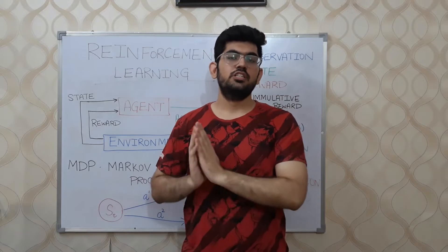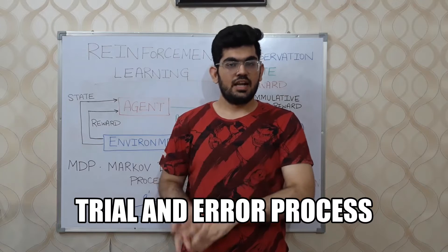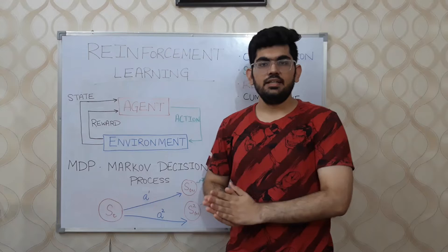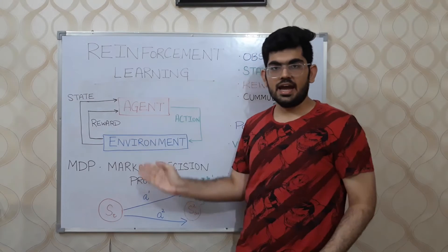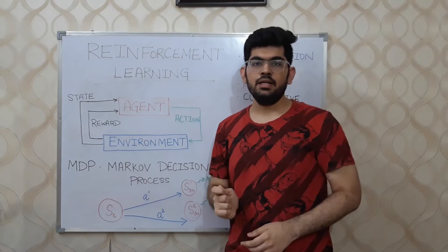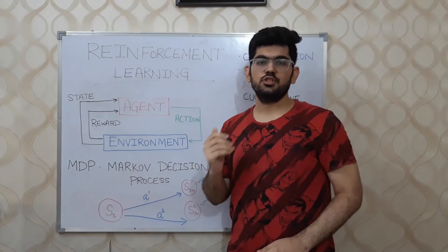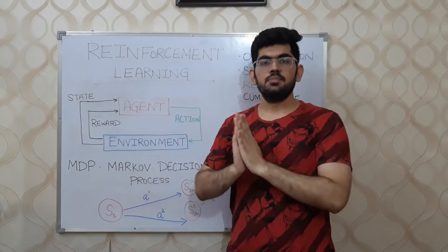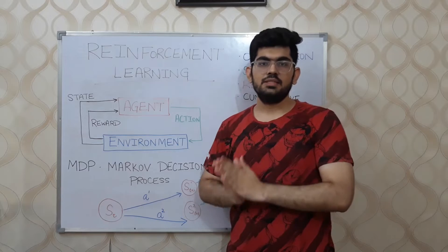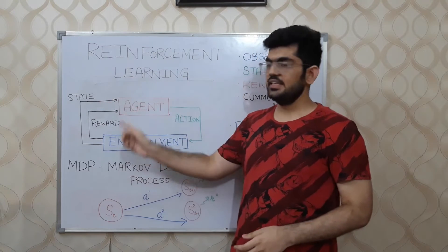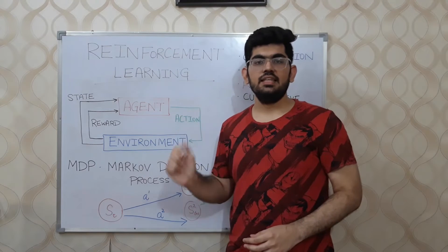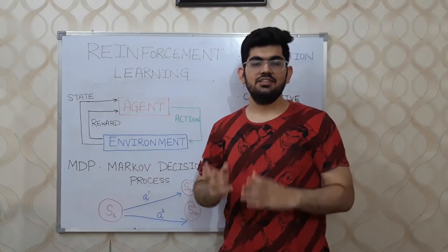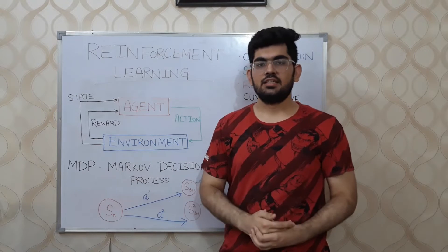Reinforcement learning is the paradigm of machine learning in which the learning happens through a trial and error process. There are two main entities present in the reinforcement learning world: the agent and the environment. An agent is a decision maker in the environment and is the machine that is learning through reinforcement learning techniques. The environment is the physical world in which the agent is present. The agent takes certain actions in the environment and the environment then informs the agent about its state and the reward that it received. The reward is a scalar value that the environment gives the agent as feedback on the action taken.